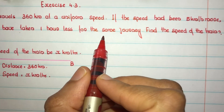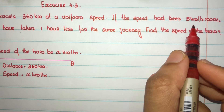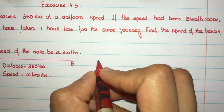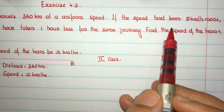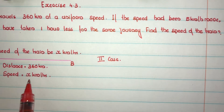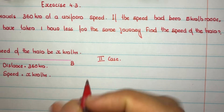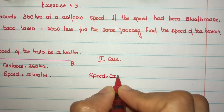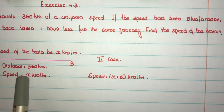Now the next part of the question: if the speed had been 5 kilometers per hour more. This is the first case. The second case is if the speed had been 5 kilometers per hour more — that is, at speed x plus 5 kilometers per hour, the same distance is traveled.